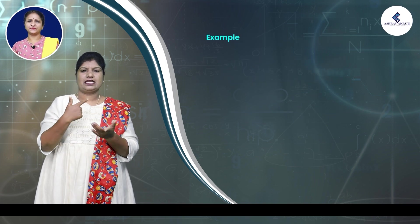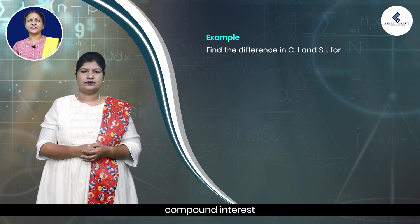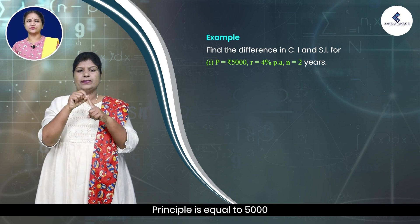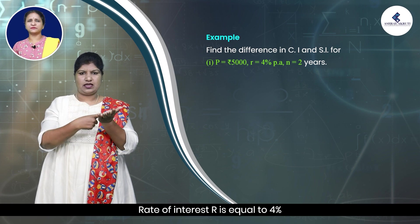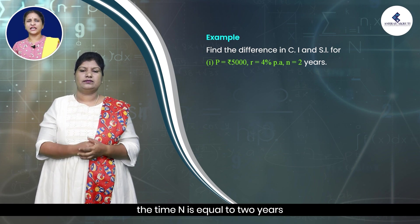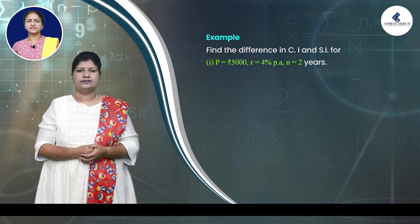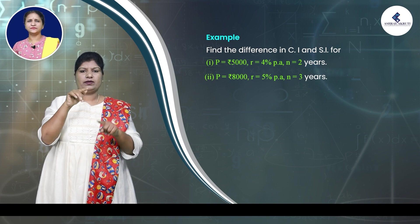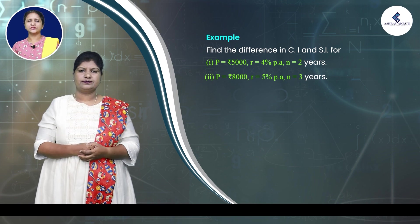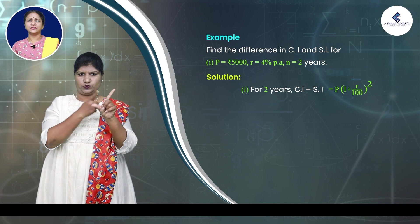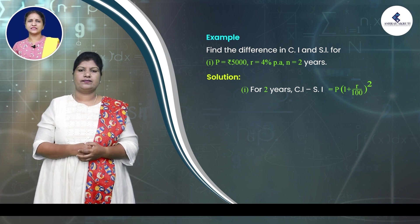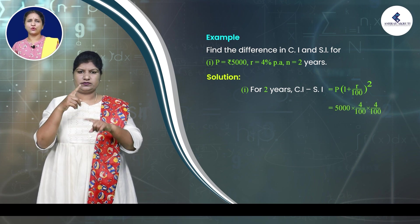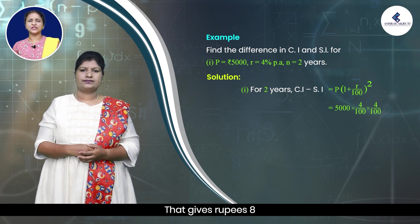Find the difference between compound interest and simple interest. First: principal P = 5,000, rate of interest R = 4 percent per annum, time N = 2 years. For 2 years, CI − SI = P × (R/100)^2 = 5,000 × (4/100) × (4/100) = rupees 8.